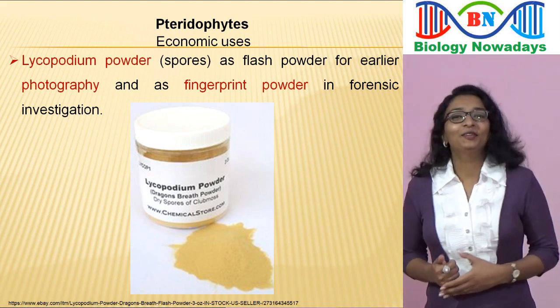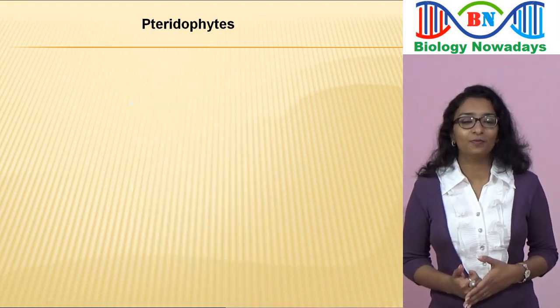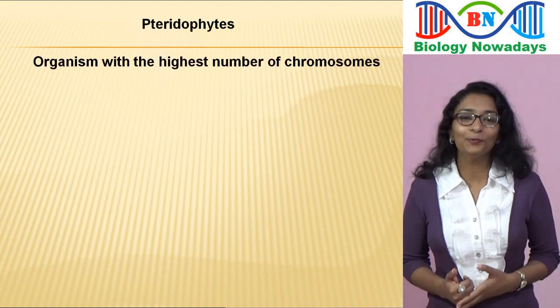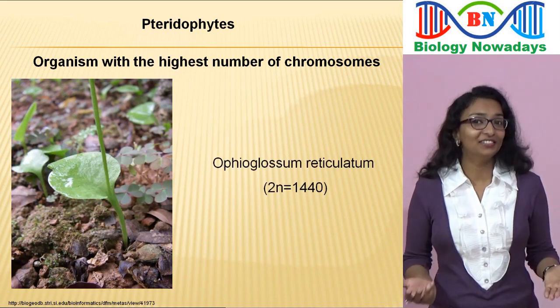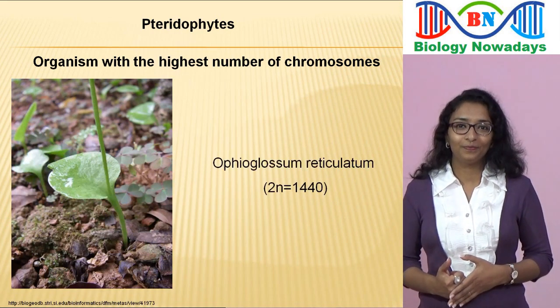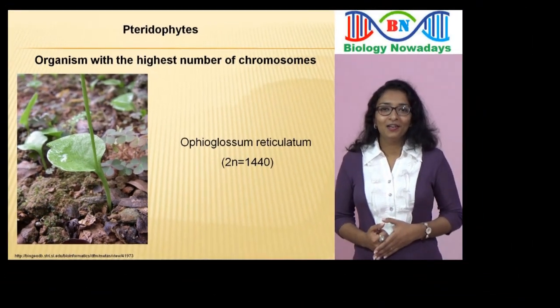Now a fun question: we humans have 46 chromosomes, but do you know which organism has the highest number of chromosomes? It's a pteridophyte — a fern called Ophioglossum reticulatum — with 1440 chromosomes. This also shows that there's no direct relation between chromosome number and the size of an organism. And that's all for this video. In the next video, we will see the group Gymnosperms. Thank you for being with me and stay tuned.